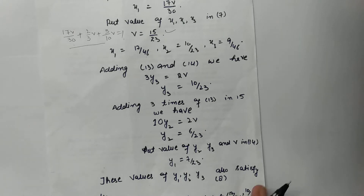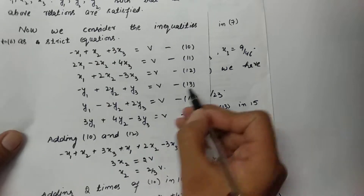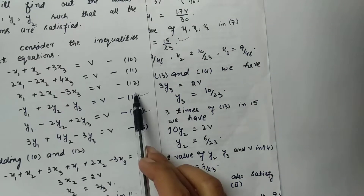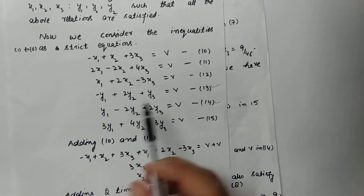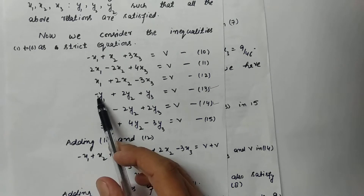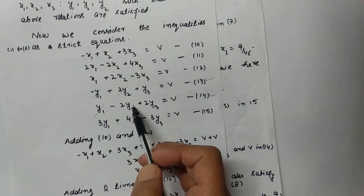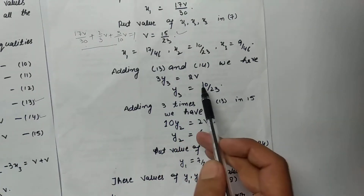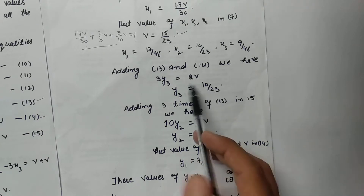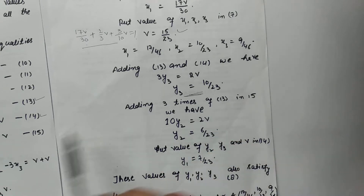In the same way, I will find the values of y1, y2, and y3. From equations 13 and 14, after adding these, the y1 terms cancel, the y2 terms cancel, and I am left with 3y3 equals 2v. Substituting the value of v equals 15/23, I get y3 equals 10/23.